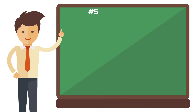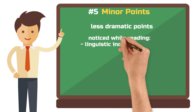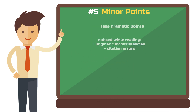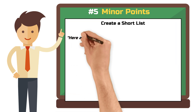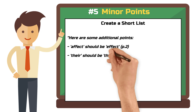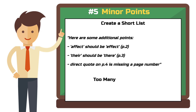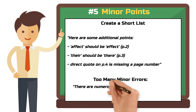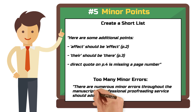Step 5: Minor Points. These are less dramatic points that caught your attention while reading — they can be linguistic inconsistencies or citation errors. Create a small list of these points and indicate the pages. For example: "A fact should be a fact on page 2; there should be 'there' on page 3; and the direct quote on page 4 is missing a page number." If there are too many minor errors, you don't need to list them all. You're not a proofreader, but a reviewer. Make a general comment like: "There are numerous minor errors throughout the manuscript. A professional proofreading service should address these."